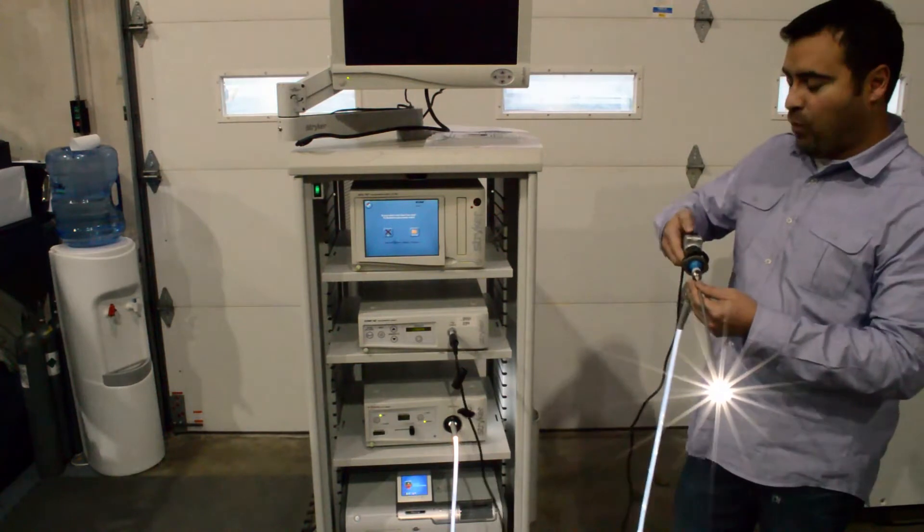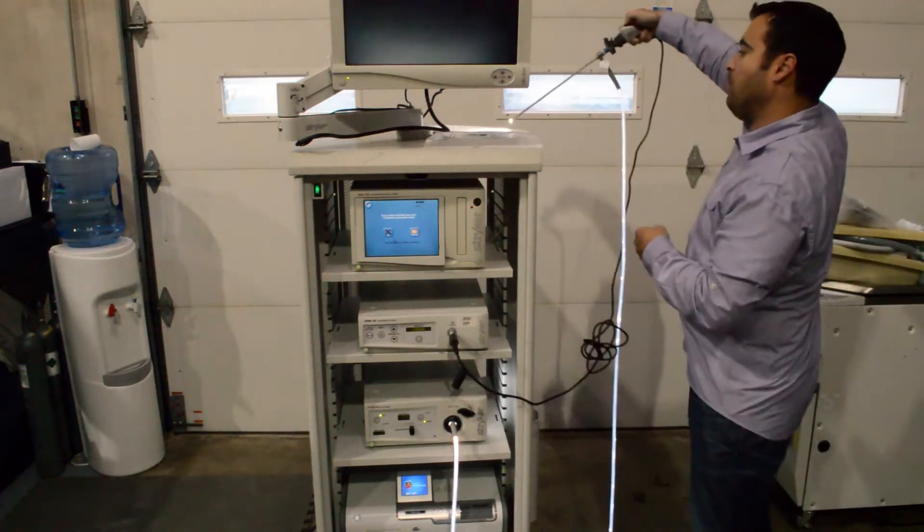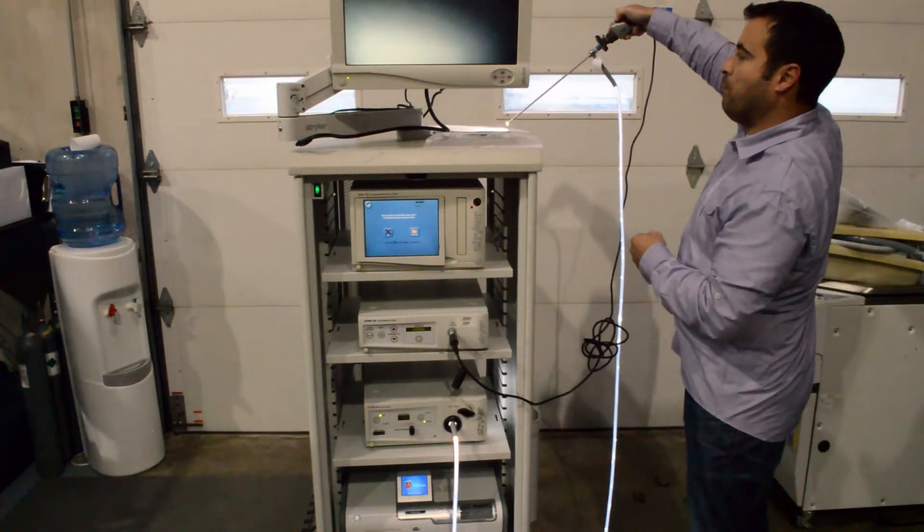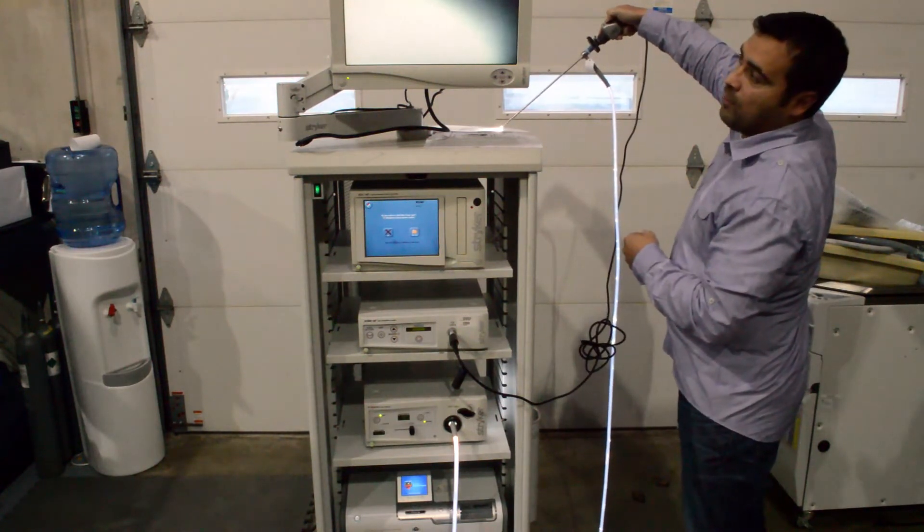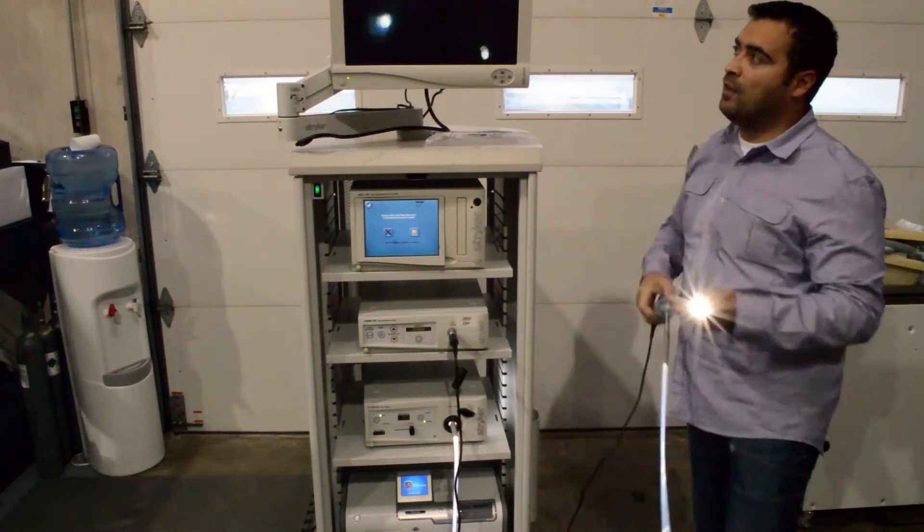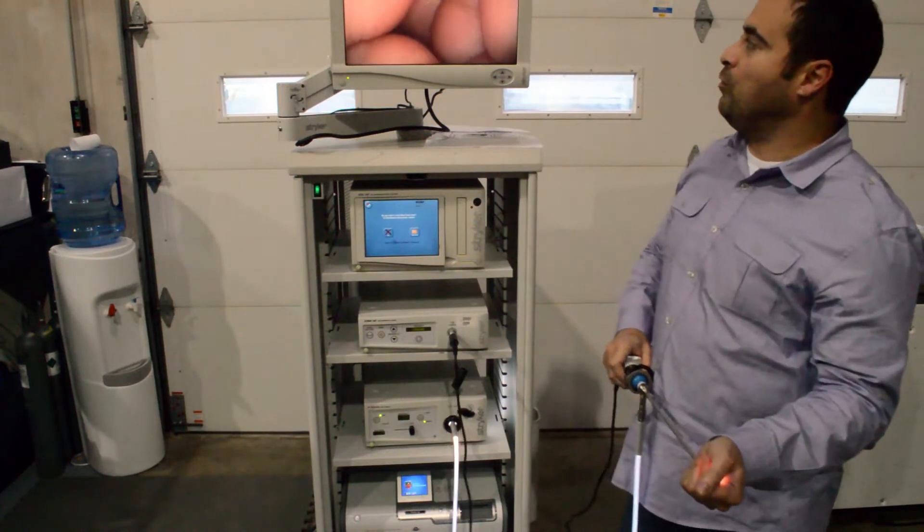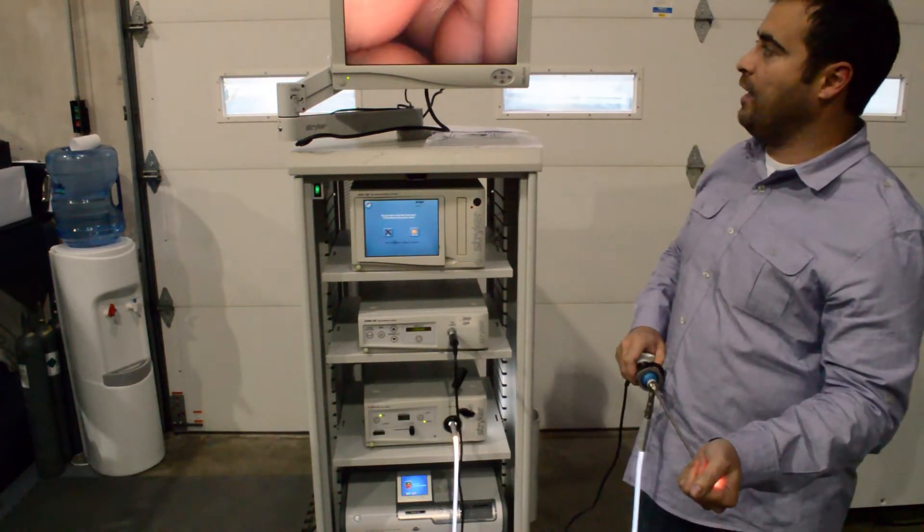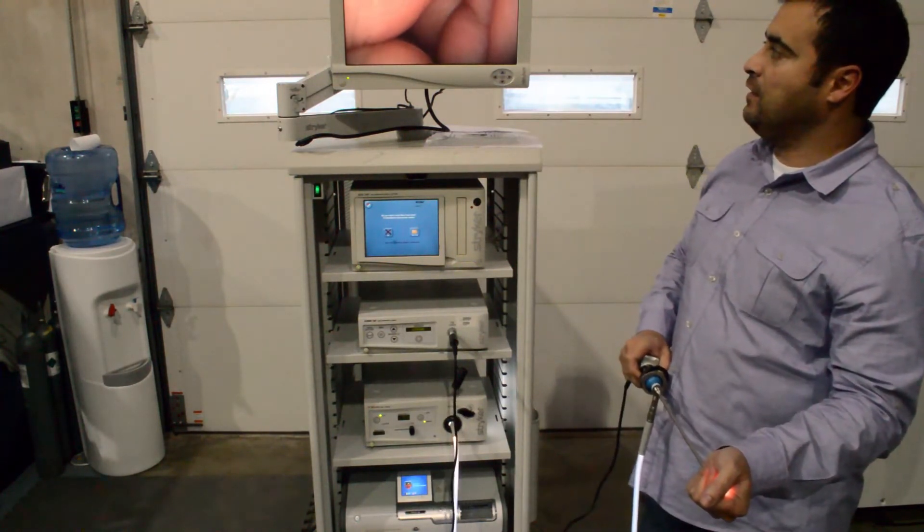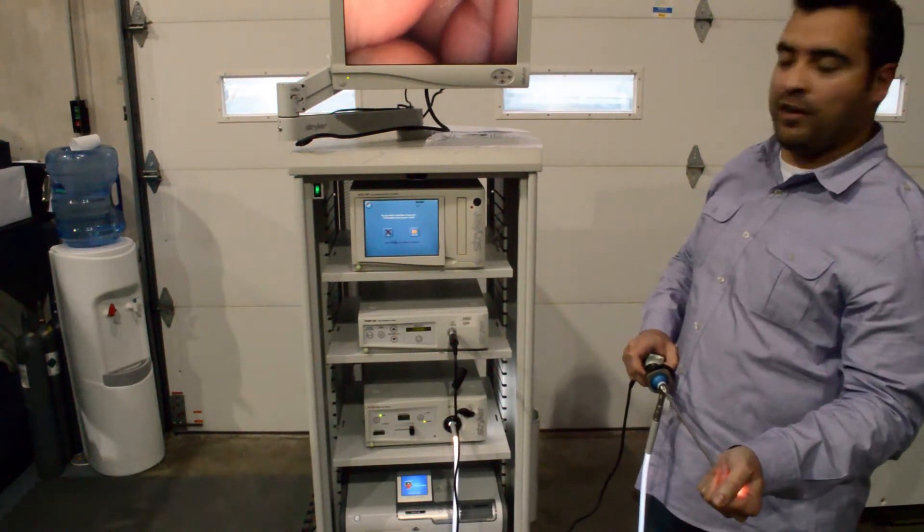First thing you're going to want to do is white balance the picture. Press and hold the W button. It says OK. You want to zoom into whatever you're looking at. Get a clear picture there.